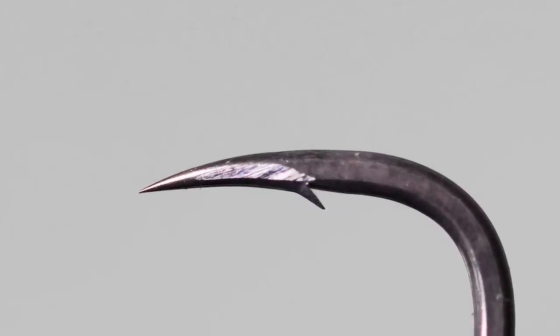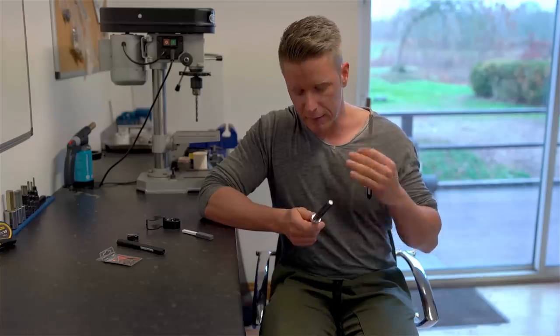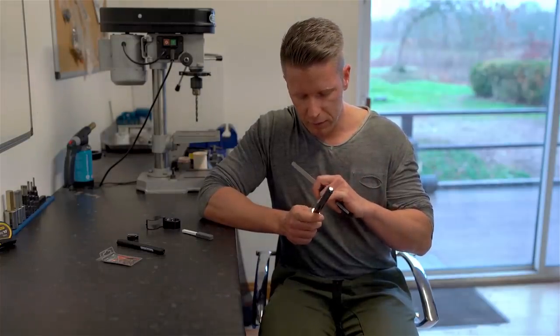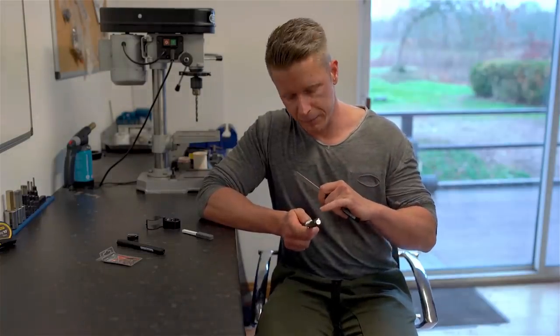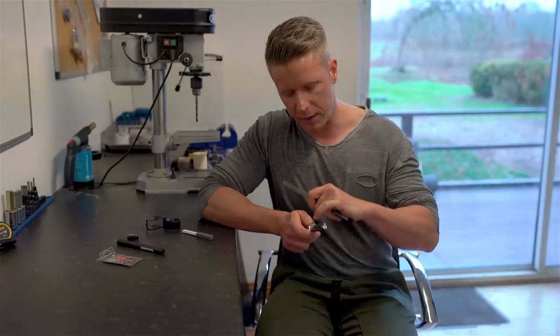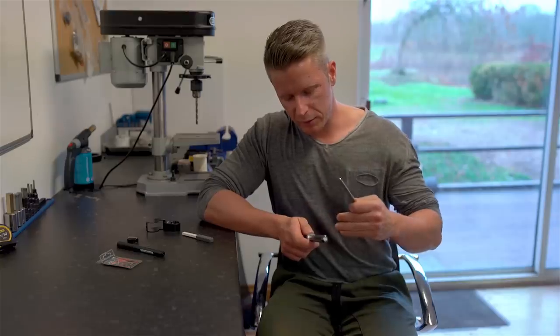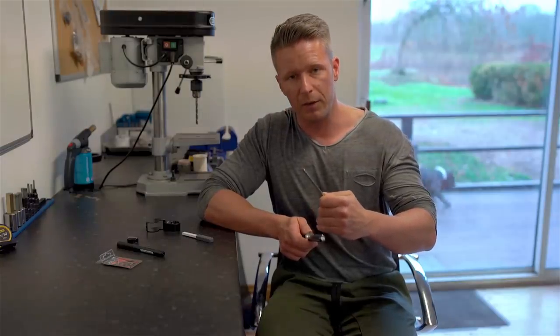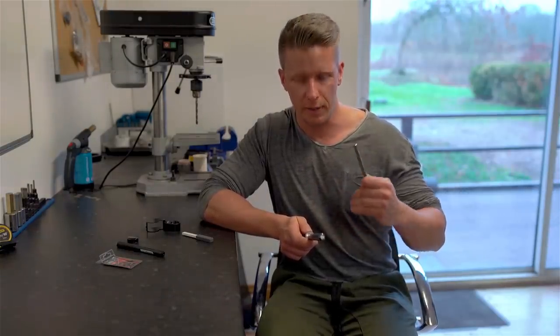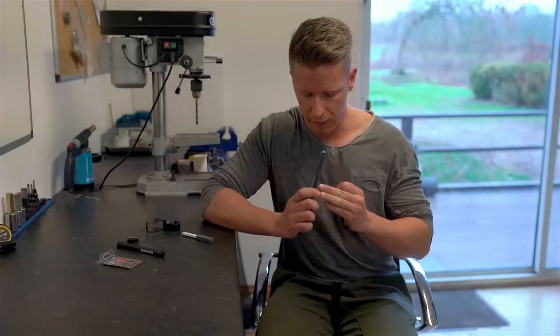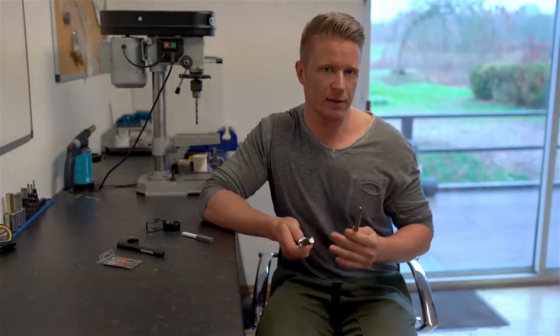A great way to see that you've got the level and the angle right is if you see that the coating is starting to go away starting at the barb and then towards the point. With each stroke that you do you'll see how the coating gets removed more and more towards the point until you see that finally the whole point is starting to shine, the coating is removed and the side is done.